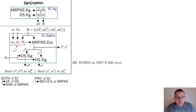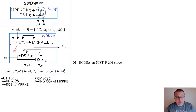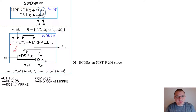In our paper, we prove that this signcryption scheme has authenticity if DS is unforgeable and if MRPKE is robust. We also show that the scheme has privacy if MRPKE is IND-CCA secure. In the iMessage design, the digital signature scheme DS is instantiated with ECDSA. We will now define the construction of the multi-recipient public key encryption scheme MRPKE.